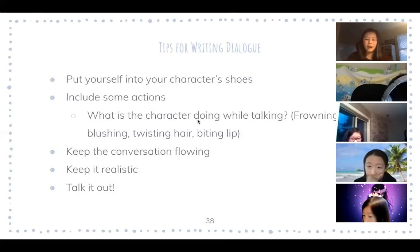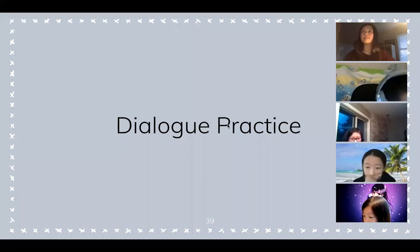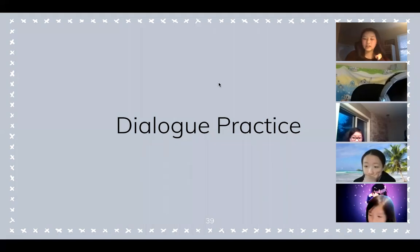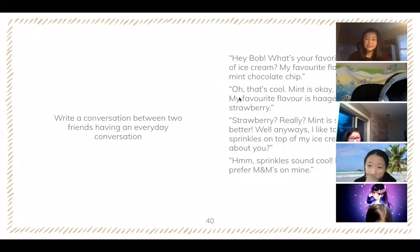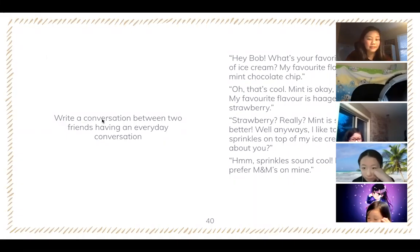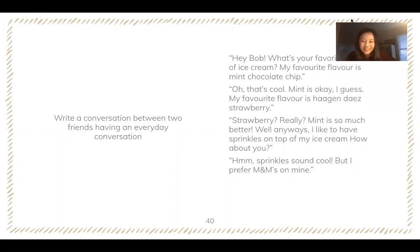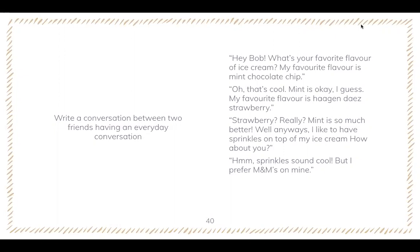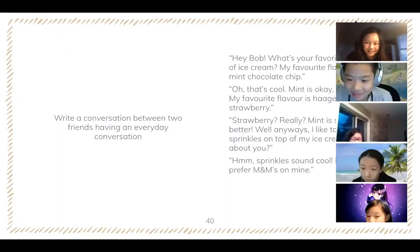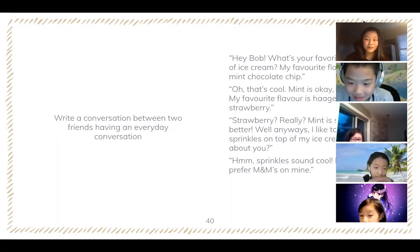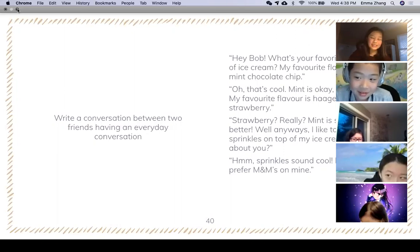Now we'll do some dialogue practice. The first prompt is to write a conversation between two friends having an everyday conversation. Here's an example from a previous class: 'Hey Bob, what's your favorite flavor of ice cream?' 'My favorite is mint chocolate chip.' 'Oh, that's cool. Mint is okay I guess. My favorite is Häagen-Dazs strawberry.' 'Also strawberry? Mint is so much better.' 'Well anyways, I like to have sprinkles on top of my ice cream. How about you?' 'Sprinkles sound good, but I prefer M&Ms on mine.'